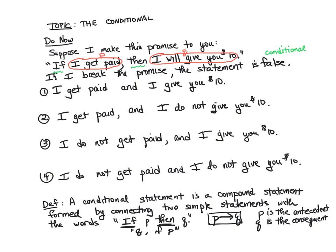Now the question is: when is a conditional true, and when is it false? We have to look at the individual simple statements P and Q. So let's start with the conditional 'if I get paid, then I will give you $10.' This is my promise to you. Let's look at these four scenarios which will help us form our truth table.